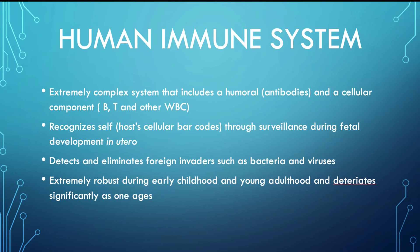The human immune system is an extremely complex system that includes a humoral and a cellular component. It recognizes self through surveillance during fetal development in utero. It detects and eliminates foreign invaders such as bacteria and viruses. It is extremely robust during early childhood and young adulthood, and deteriorates significantly as one ages.